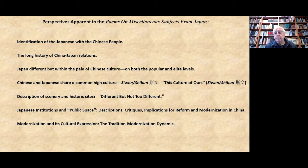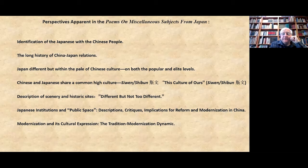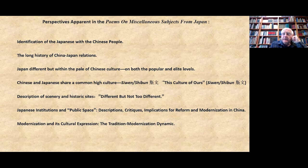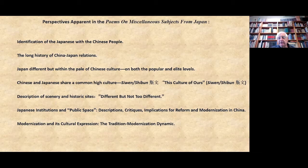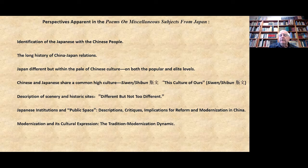Chinese and Japanese share a common high culture — what Peter Bol called 'This Culture of Ours,' siwen in Chinese, shibun in Japanese. Poem topics also include description of scenery and historic sites that are different from China but not too different; Japanese institutions and public space — museums, hospitals, public parks; and modernization's cultural expression. Huang explored the tradition-modernization dynamic — not a dichotomy but a dynamic — how to preserve tradition in the course of modernization and how to modernize while yet preserving tradition.